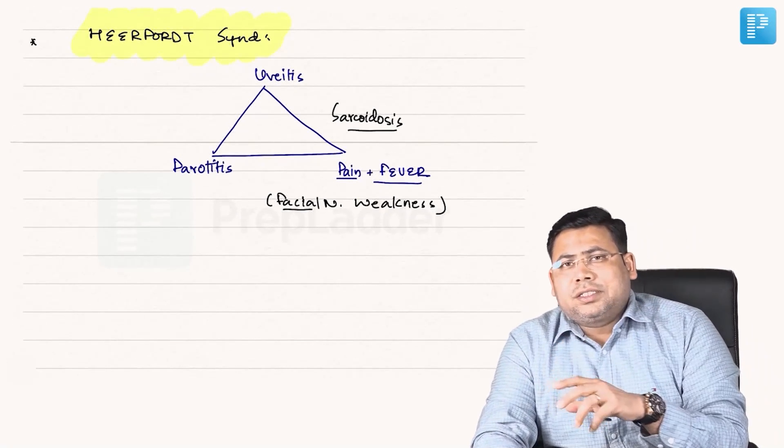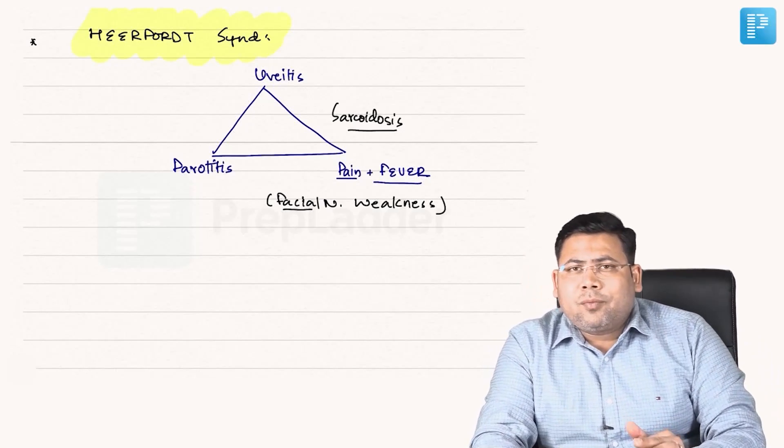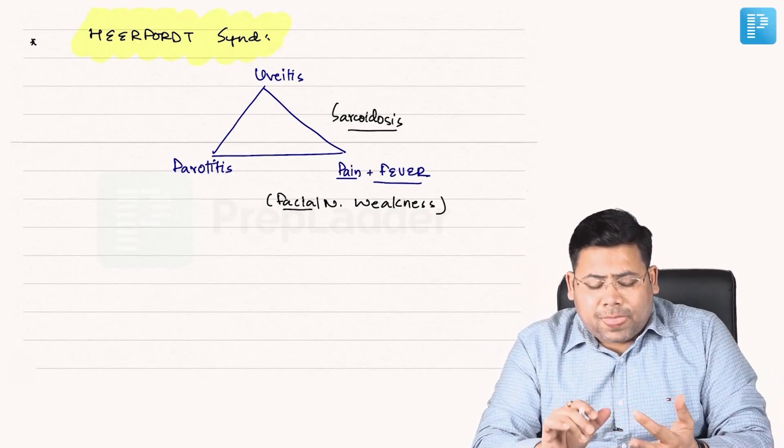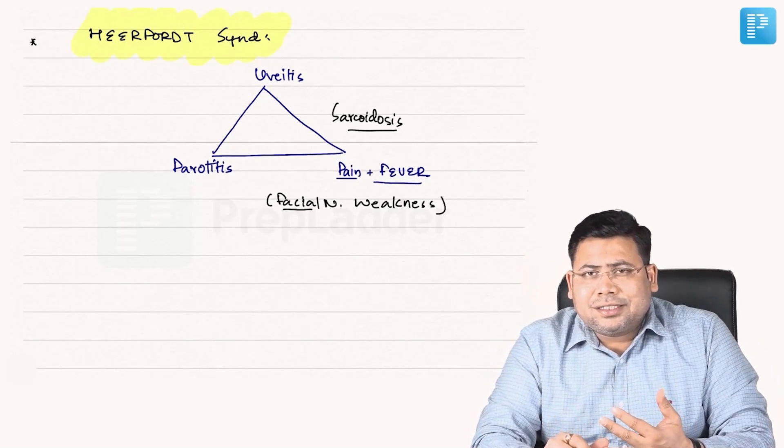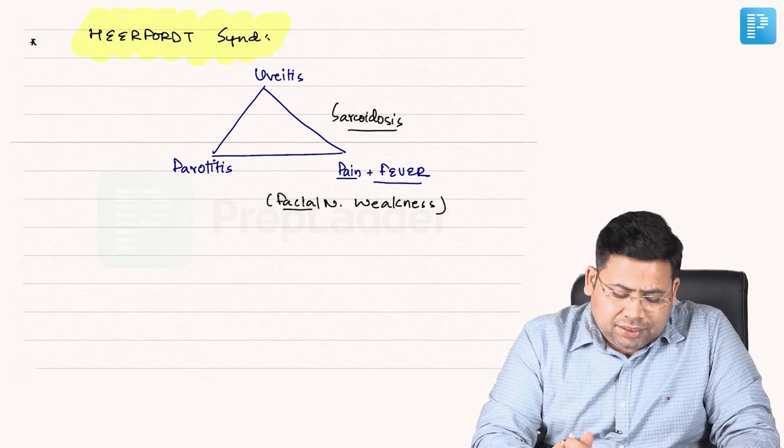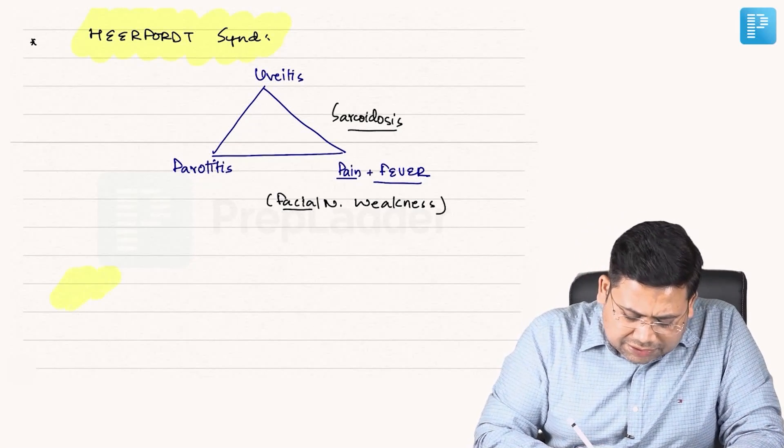I'm not teaching you Löfgren syndrome, but if you talk about it, we have bilateral hilar lymphadenopathy along with arthralgia. So arthralgia plus lymphadenopathy, that is Löfgren syndrome.